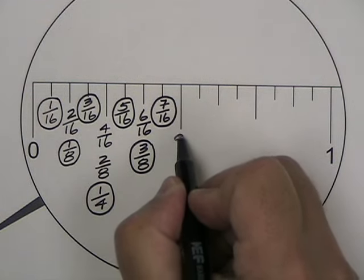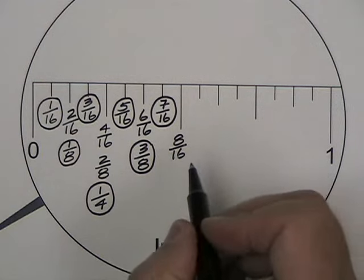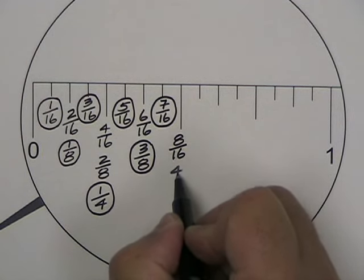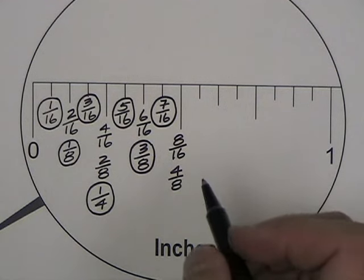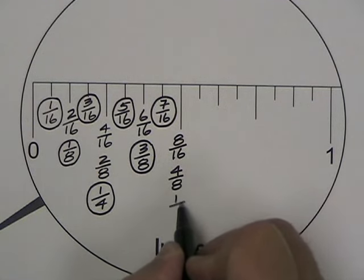Eight sixteenths, if you divide the top and bottom by two, you end up with four eighths. And if you continue dividing the top and bottom by two, you will end up with one half.